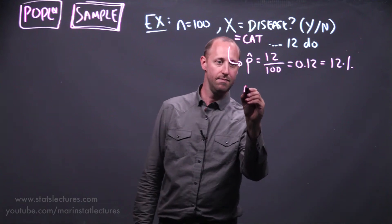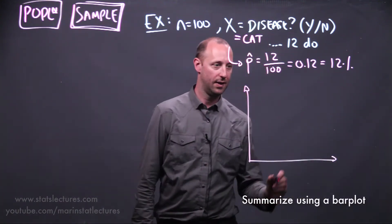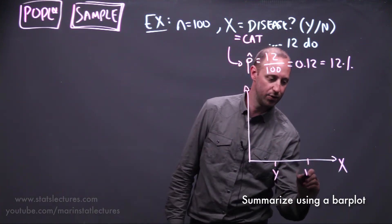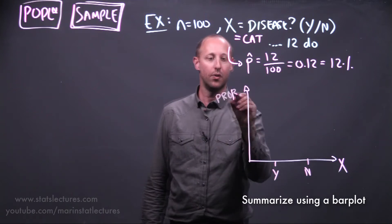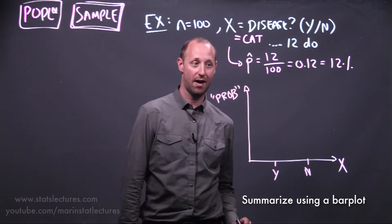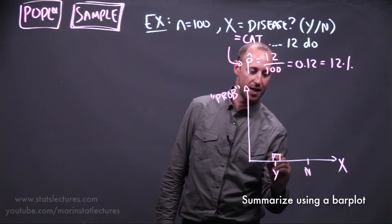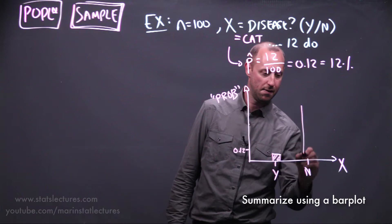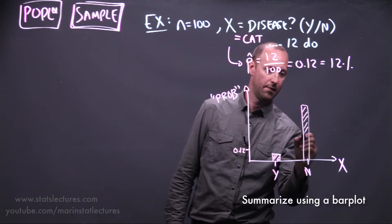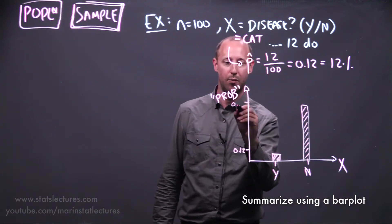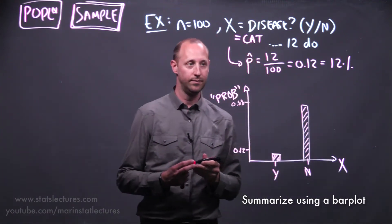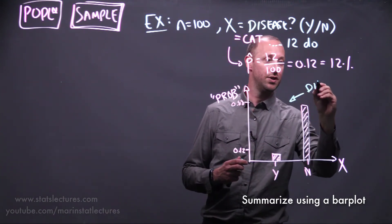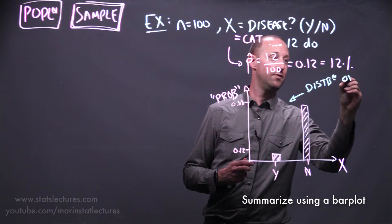We can summarize this using a bar plot. Here we have our variable x — whether they have the disease or not — with individuals who do and who don't. On the y-axis we look at the probability of having the disease. We can see in our sample 0.12 had the disease and 0.88 did not. This plot describes the distribution of our sample.